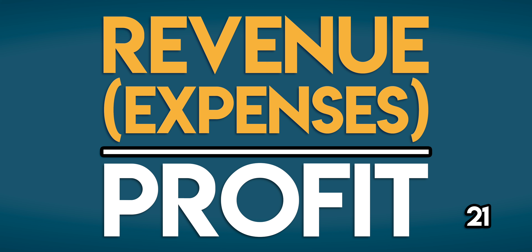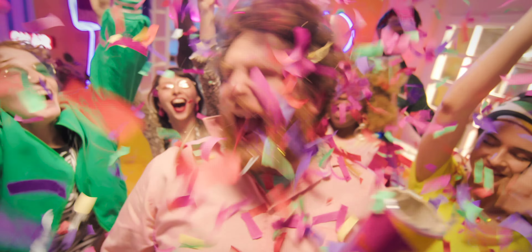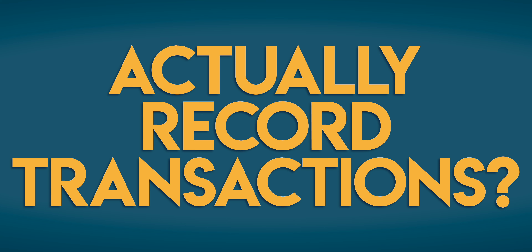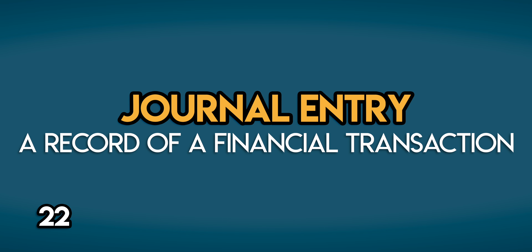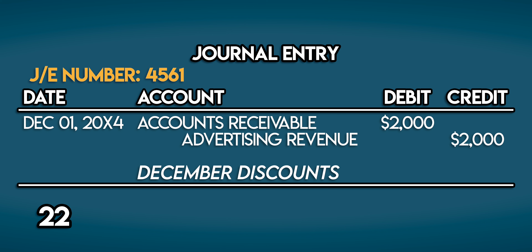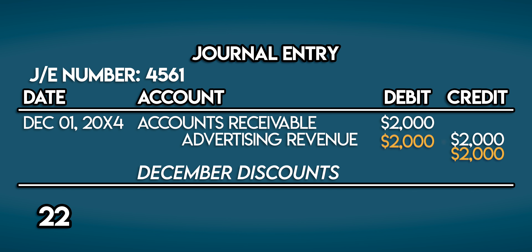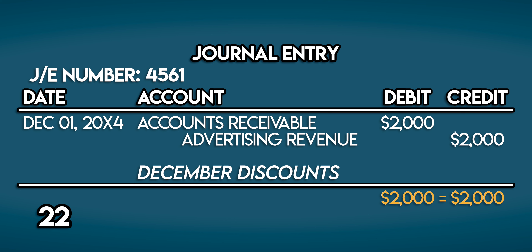Now, how do we actually record transactions? We use journal entries. A journal entry is a record of a financial transaction. It includes the journal number, a short description of the transaction, a posting date, the names of the accounts being posted to, and the amounts — debits go on the left and credits go on the right. Total debits must equal total credits, because every journal entry has to balance. When the journal is prepped and ready, we post it, and each side hits a different account.